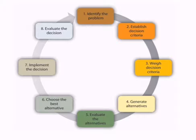The third step in the decision making process is allocating weight to the decision criteria. To assign weight to each criteria defined in step two, we simply rank the items on the list from most important to least important. If we have established factors in the decision criteria, we can allocate the correct marks and the correct weight to each factor.